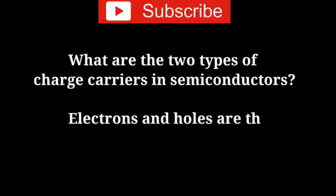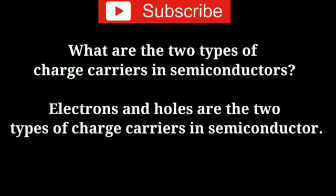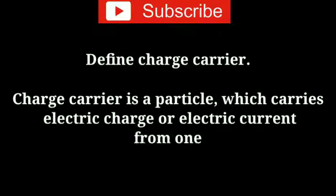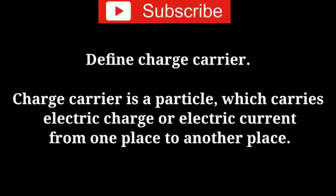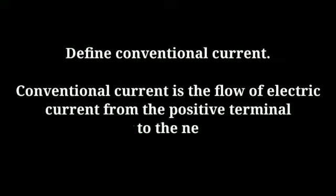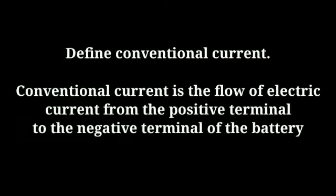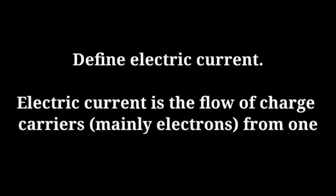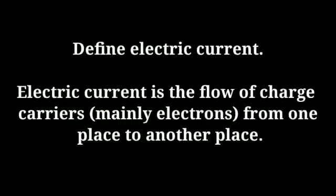What are the two types of charge carriers in semiconductors? Electrons and holes are the two types of charge carriers in semiconductors. Define charge carrier: a charge carrier is a particle which carries electric charge or electric current from one place to another. Define conventional current: conventional current is the flow of electric current from the positive terminal to the negative terminal of the battery. Define electric current: electric current is the flow of charge carriers, mainly electrons, from one place to another.